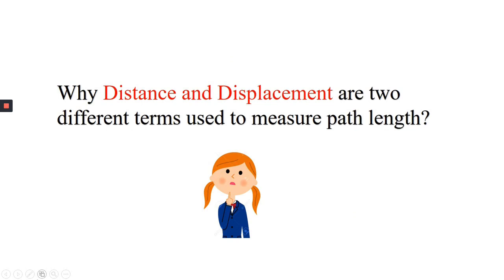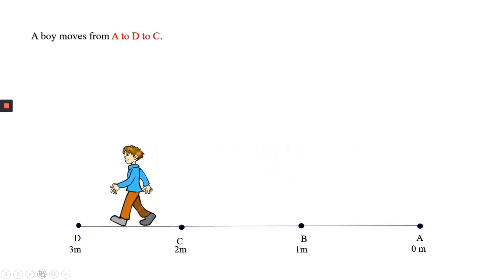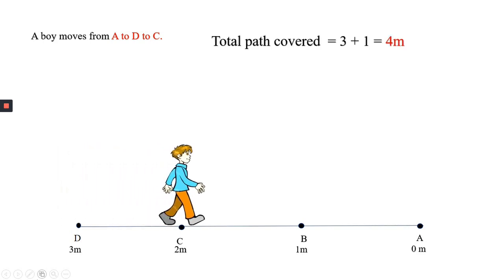To understand this, let's take an example. A boy moves from A to D, 3 meters, and from D to C, 1 meter. Total path covered is equal to 3 plus 1 equals 4 meters.